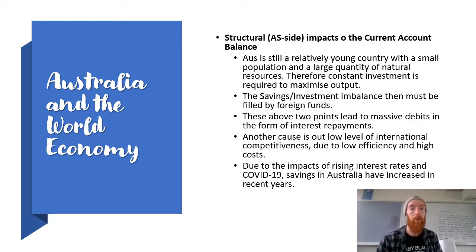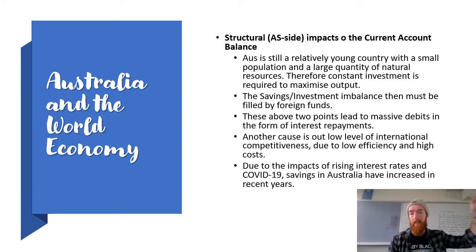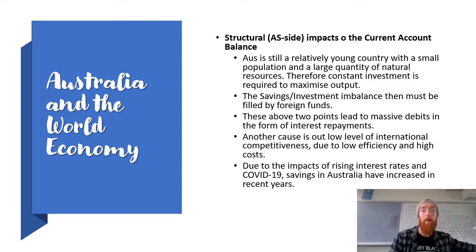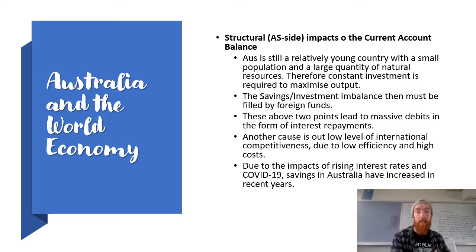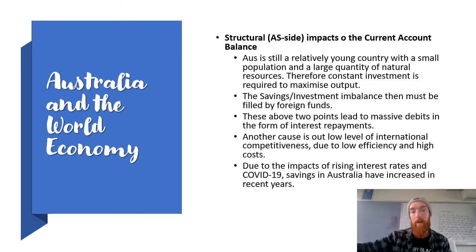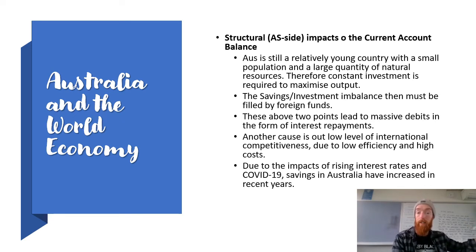Now we get into the structural impacts on the current account balance. Structural factors are long-term, aggregate supply-side impacts. Historically, Australia has been in a current account deficit because as a relatively young country with a small population but a large quantity of natural resources, we need constant investment to maximize output but don't have enough domestic savings to fund it. That savings-investment imbalance must be filled with foreign funds, leading to massive debits in the form of interest repayments in net primary incomes.